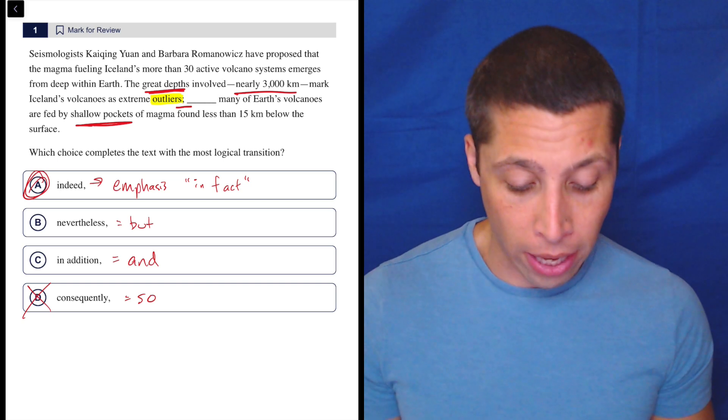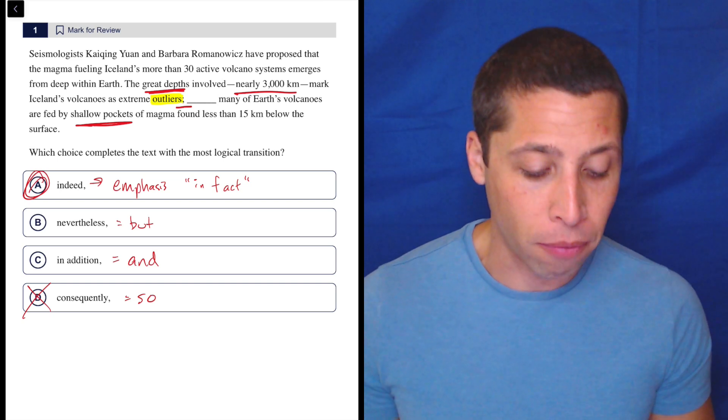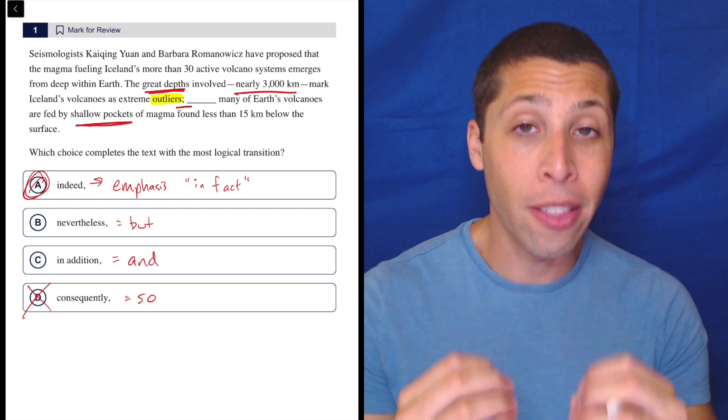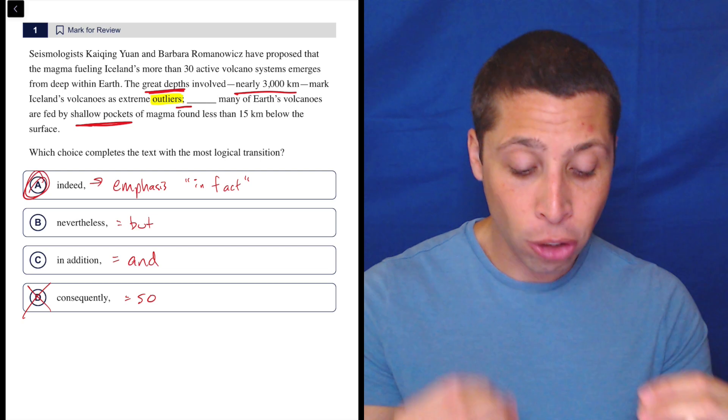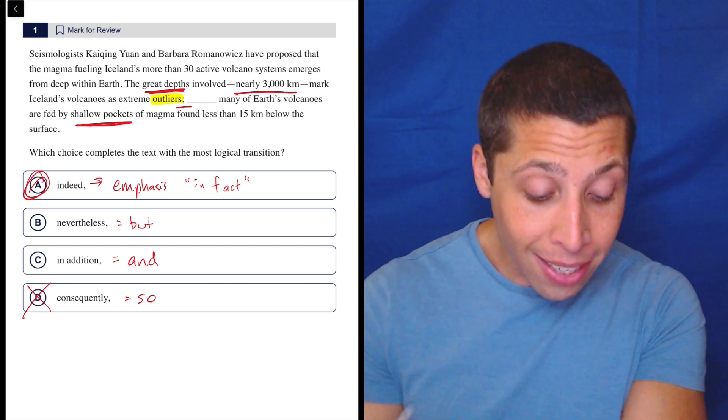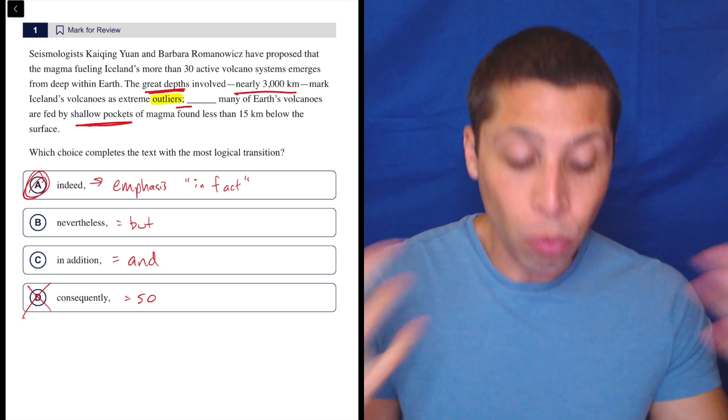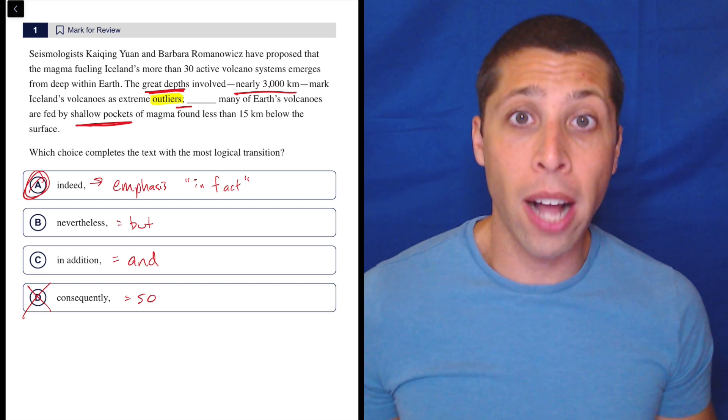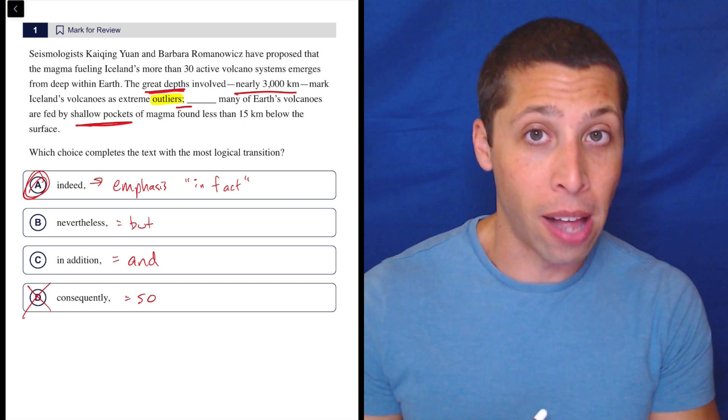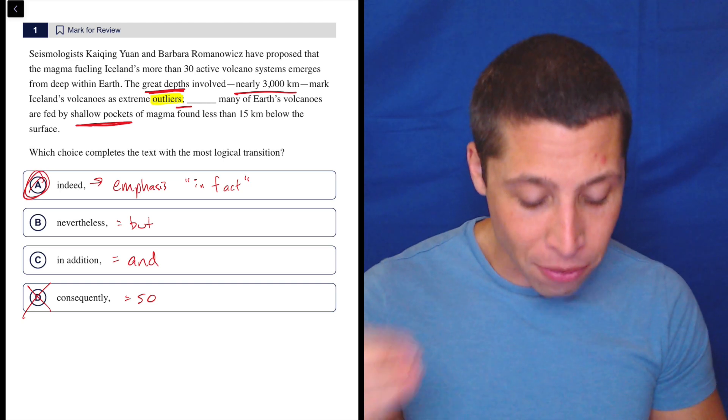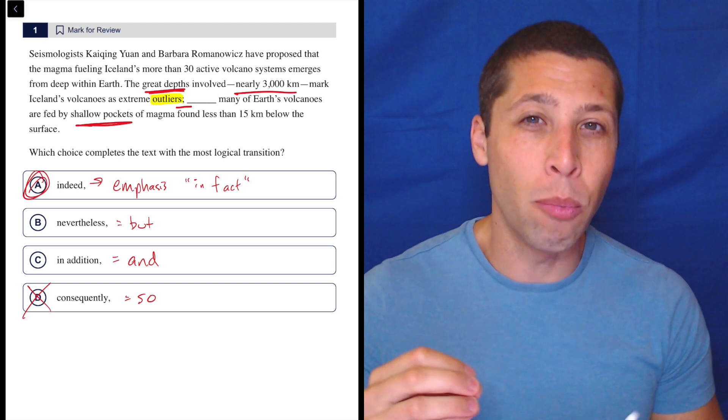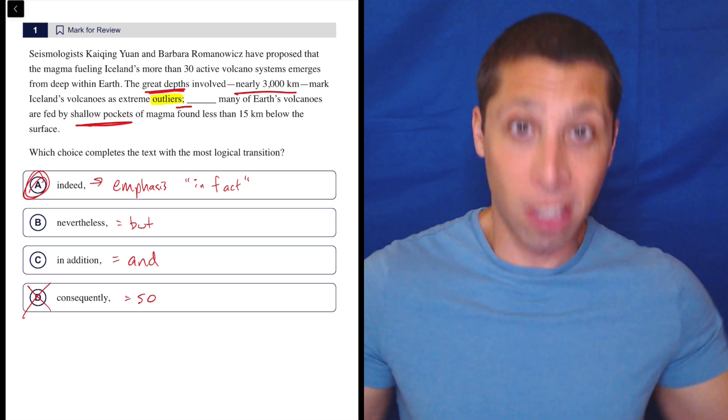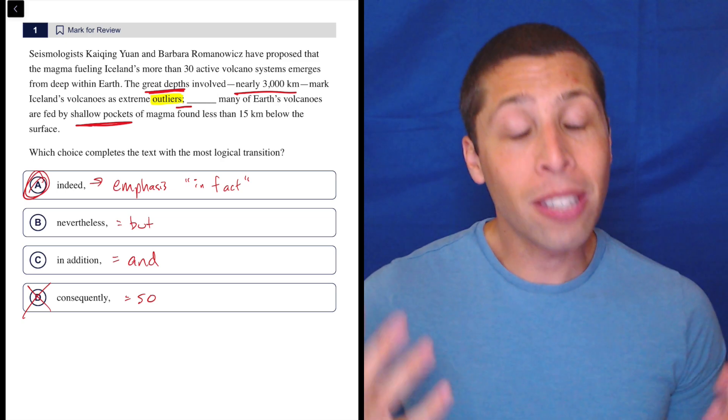Indeed, many of Earth's volcanoes are fed by shallow pockets of magma found less than 15 kilometers below the surface. They're describing, they're giving us evidence that shows why the Iceland volcanoes are outliers. The reason is that most of them, many of the others are very shallow. So we are providing evidence that they're outliers in Iceland. And that's why nevertheless doesn't really work because that would kind of dismiss the point that we're making in the first sentence. What we're really trying to do is support that point.